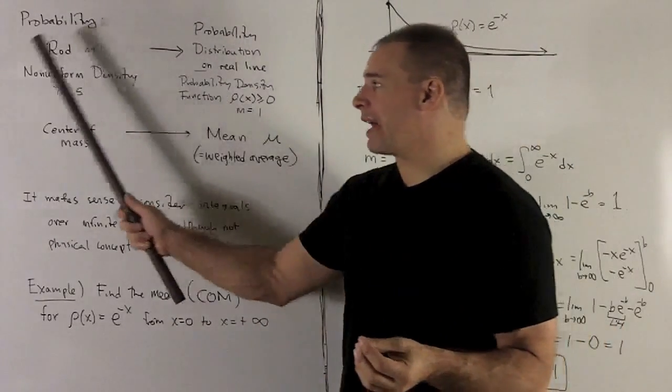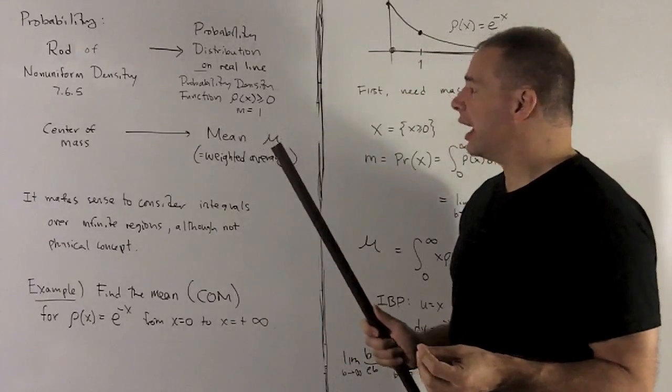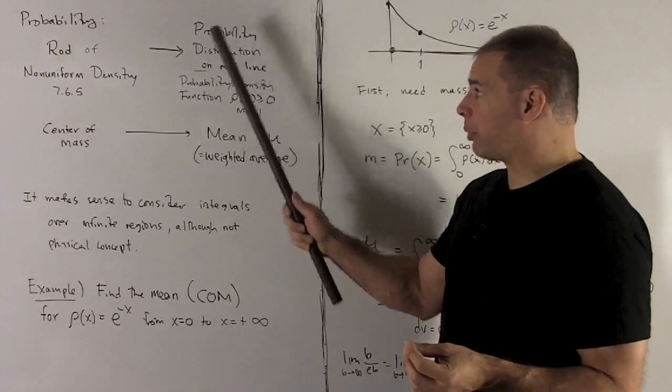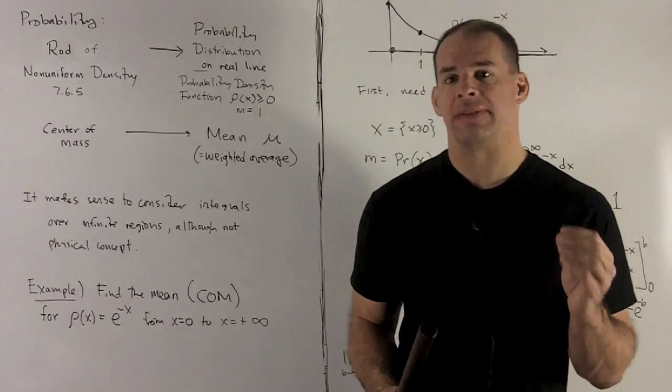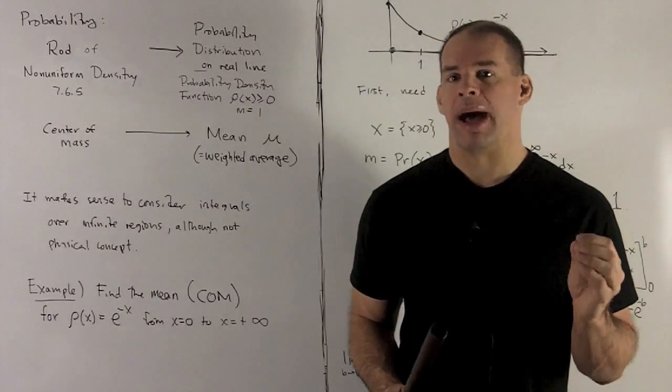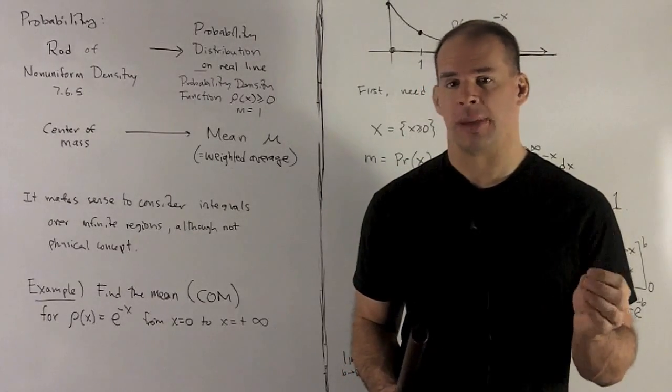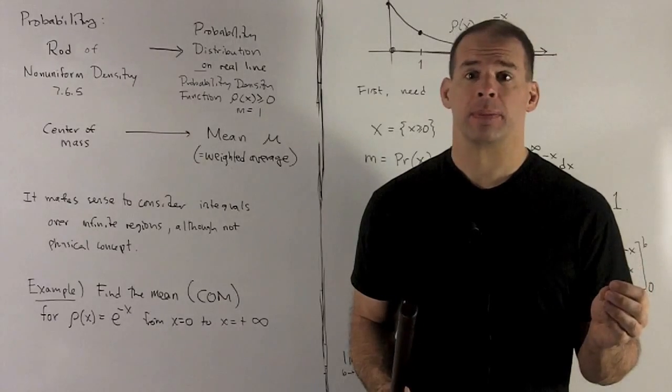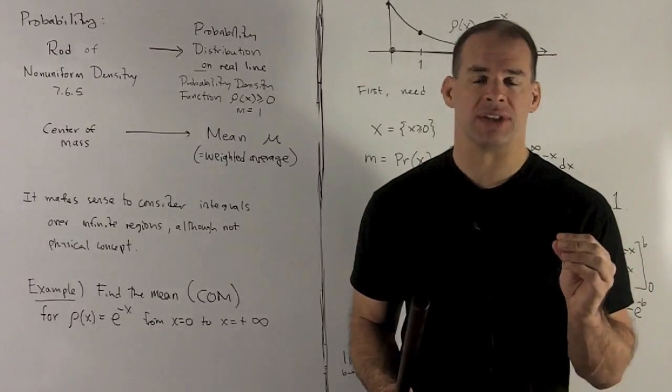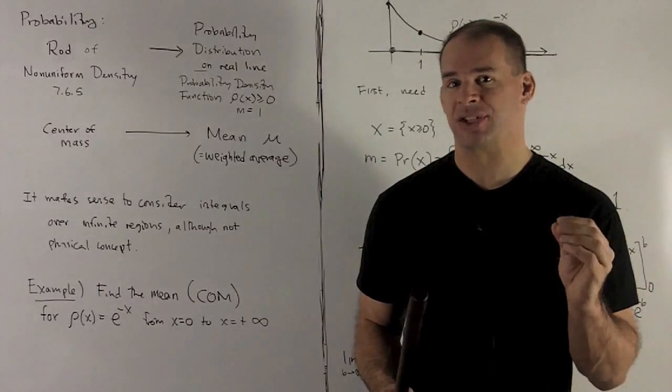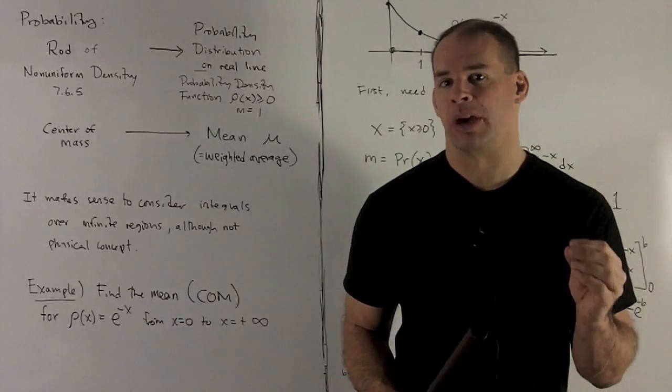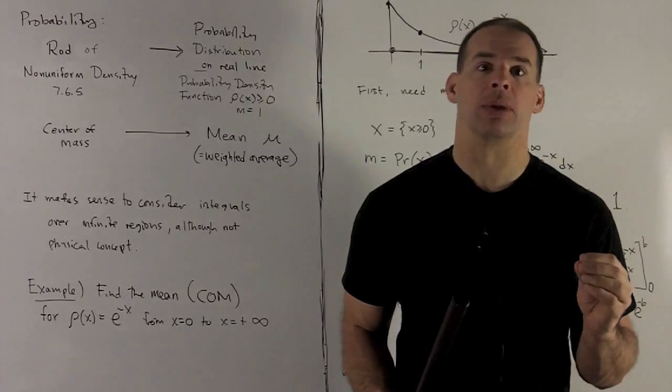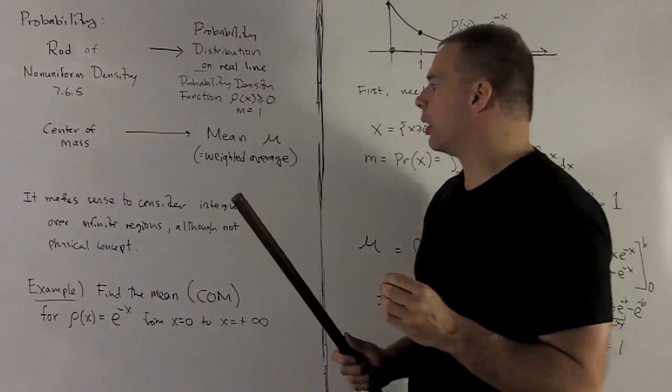We're still going to have a density function in this case. And for probability distributions, we're going to call this the probability density function. It'll be a positive function on our subset, say on the real line. And the key thing about this is that we find its mass, the mass is going to be equal to one. So the mass being equal to one is pretty much what brings probability to the table.